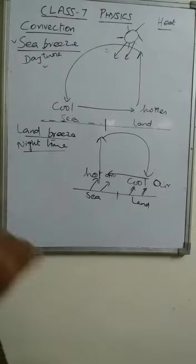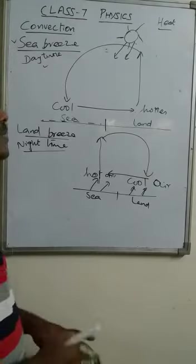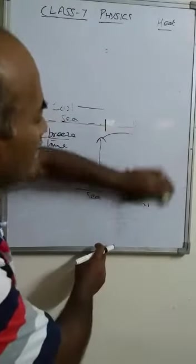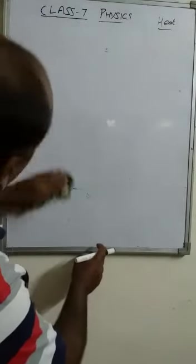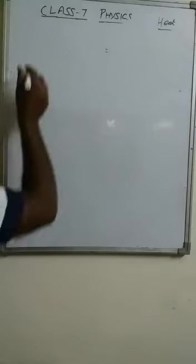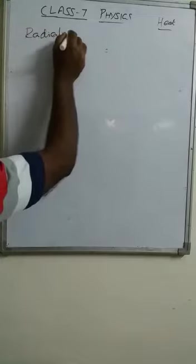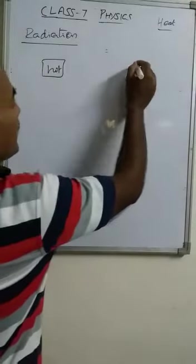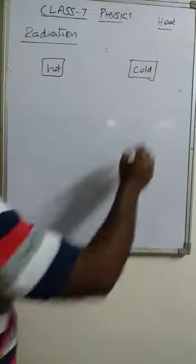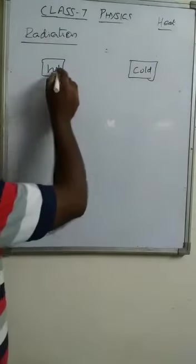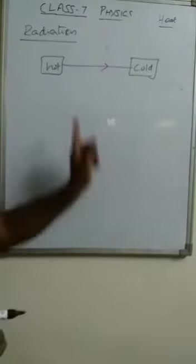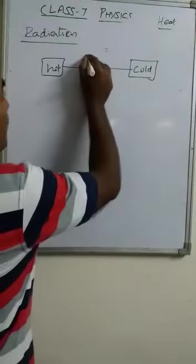We have now completed the convection process. The next process in the transfer of heat is radiation. Similar to conduction and convection, in radiation heat is also transferred from hot to cold, but there is a little difference. In radiation, the heat is transferred from hot to cold — but the difference is this transfer of heat takes place without affecting the space in between them, without the medium in between them.